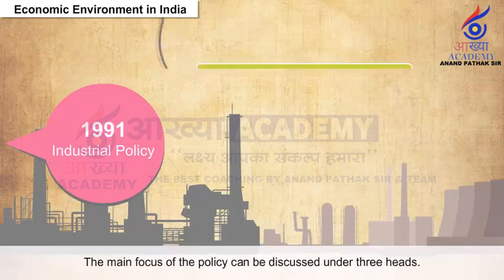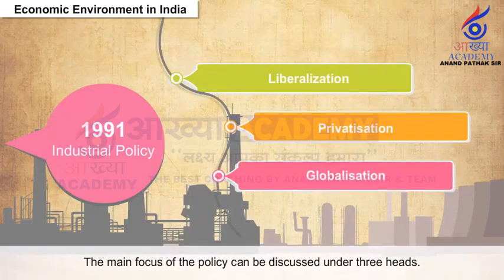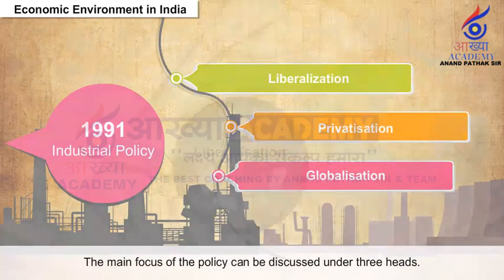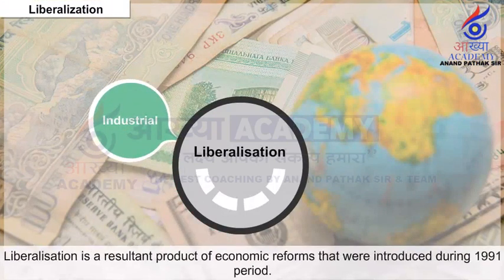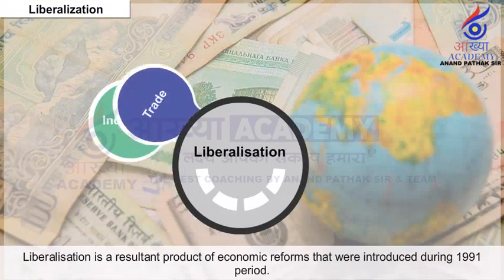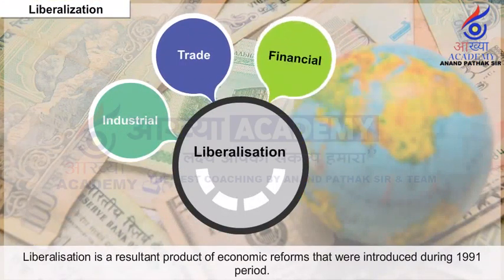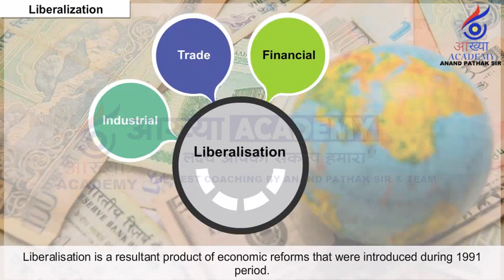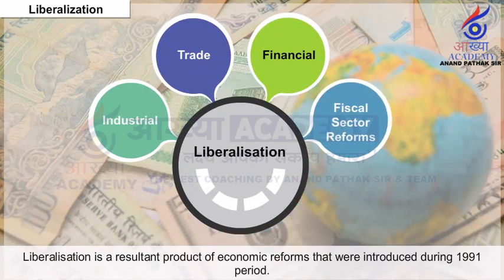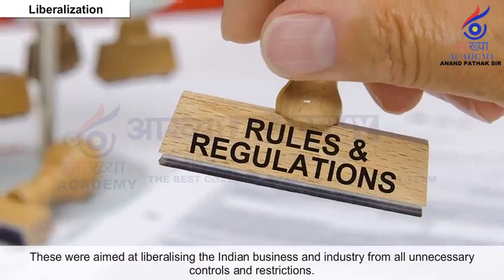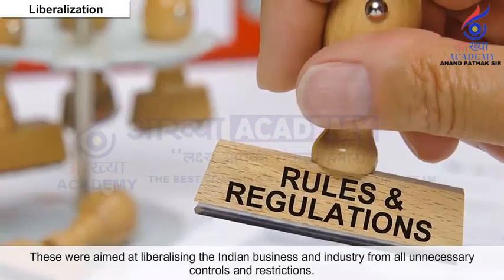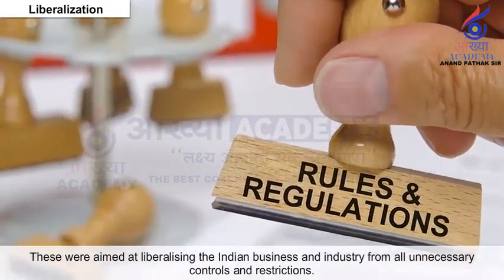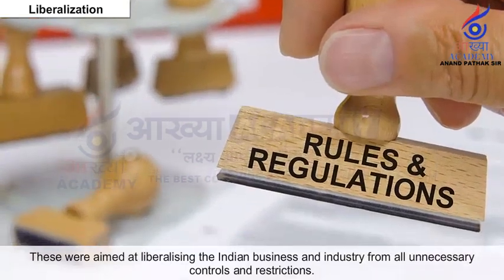The main focus of the policy can be discussed under three heads. Liberalization: Liberalization is a resultant product of economic reforms introduced during the 1991 period. These were aimed at liberalizing the Indian business and industry from all unnecessary controls and restrictions.